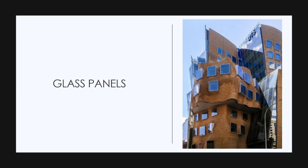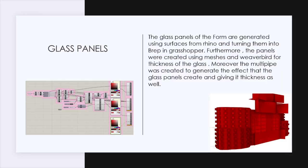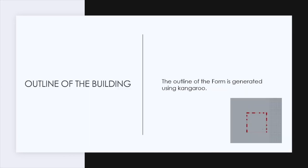Moreover, the third element is the glass panels. The glass panels of the form are generated using surfaces from Rhino and turning them into B-Reps in Grasshopper. The panels were created using meshes and weaver-bird for thicknesses of the glass. The outline of the form is generated using kangaroo.